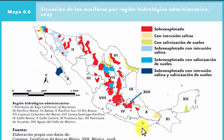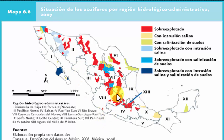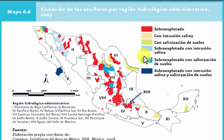Los acuíferos en color naranja corresponden a acuíferos costeros con intrusión salina. Otros presentan salinización del suelo, por contacto con cloruros y sales del mar, pero también internamente por regadíos o por mal drenaje en suelos de poca pendiente. Los acuíferos en azul son los sobreexplotados con intrusión salina y salinización de suelo combinadas. Todo esto se tratará con más detalle en el tema específico de intrusión marina.